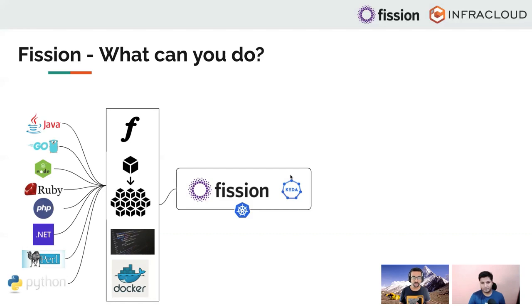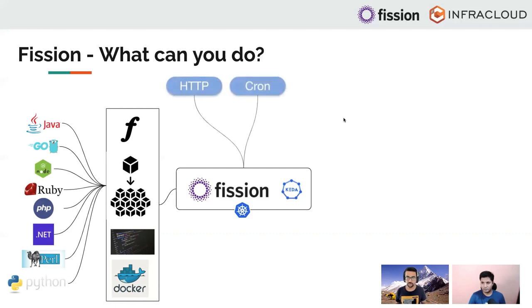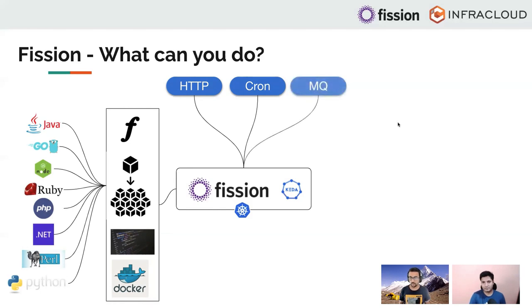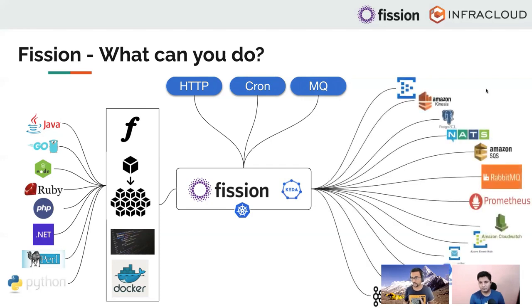Once you have deployed your functions and microservices in many of these languages onto Fission, you might want to call them. You can call them using HTTP. You can also call them using Cron - there's a cron timer built into Fission that allows functions to be invoked periodically. It also integrates with message queue resources using KEDA. Today we support Amazon Kinesis, Amazon SQS, NATS, Kafka, and there are more connectors being added.